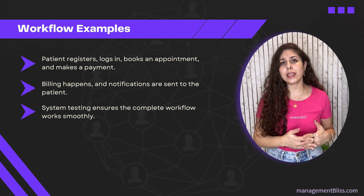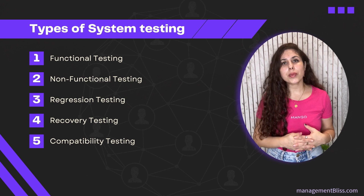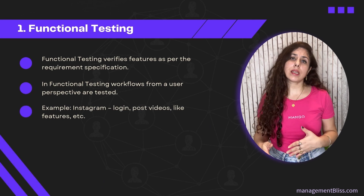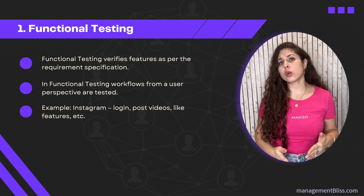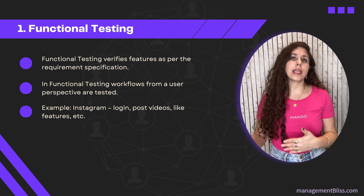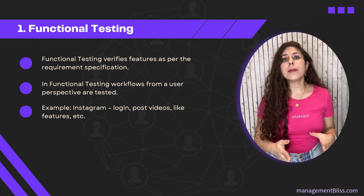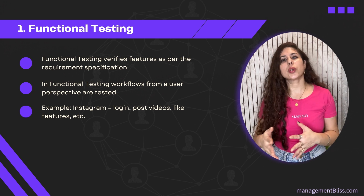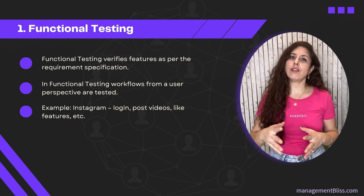There will be many such test scenarios covered in system testing. Let's look at the different types of testing done as part of system testing. First is functional testing. In functional testing, we verify all the features of the software according to the requirement specification and test all workflows from a user's perspective. For example, in an app like Instagram, we check whether a user can log in, post videos or pictures, browse their feed, press the like button, and see if the like count increments. All these workflows from the user's perspective are tested in functional testing.